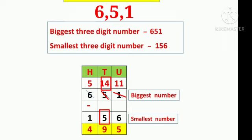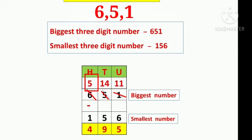Here in the tens place: 4 tens minus 5 tens. We cannot subtract 5 tens from 4 tens. So we untie 1 hundred from 6 hundreds. We strike out 6 in the hundreds place and write 5 above it.